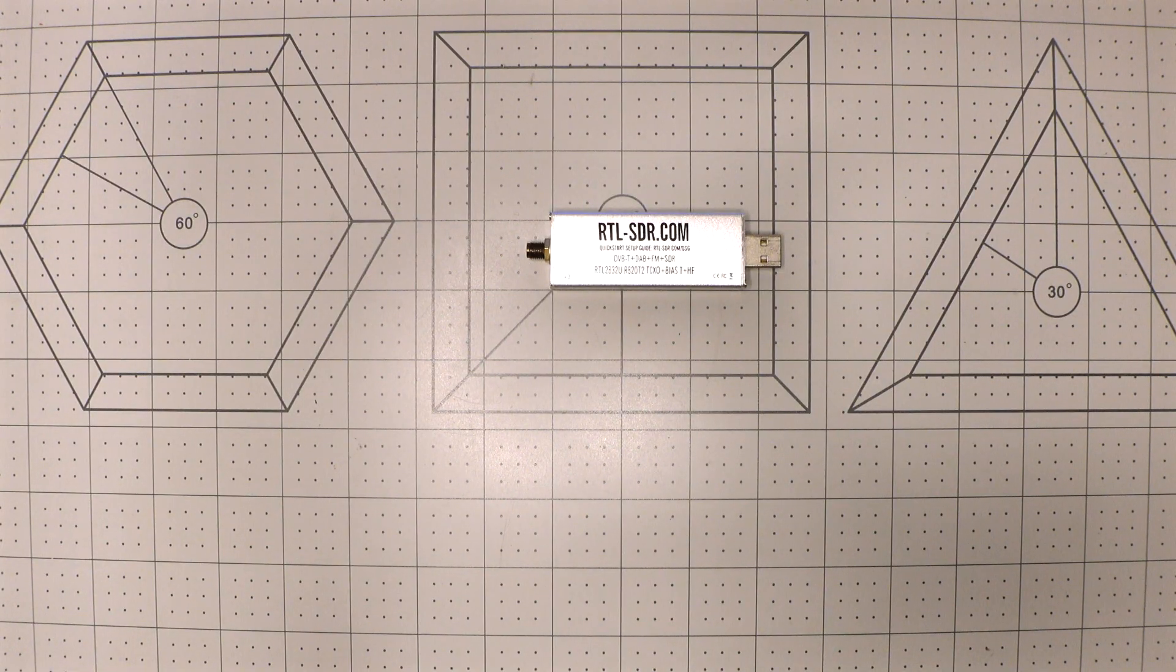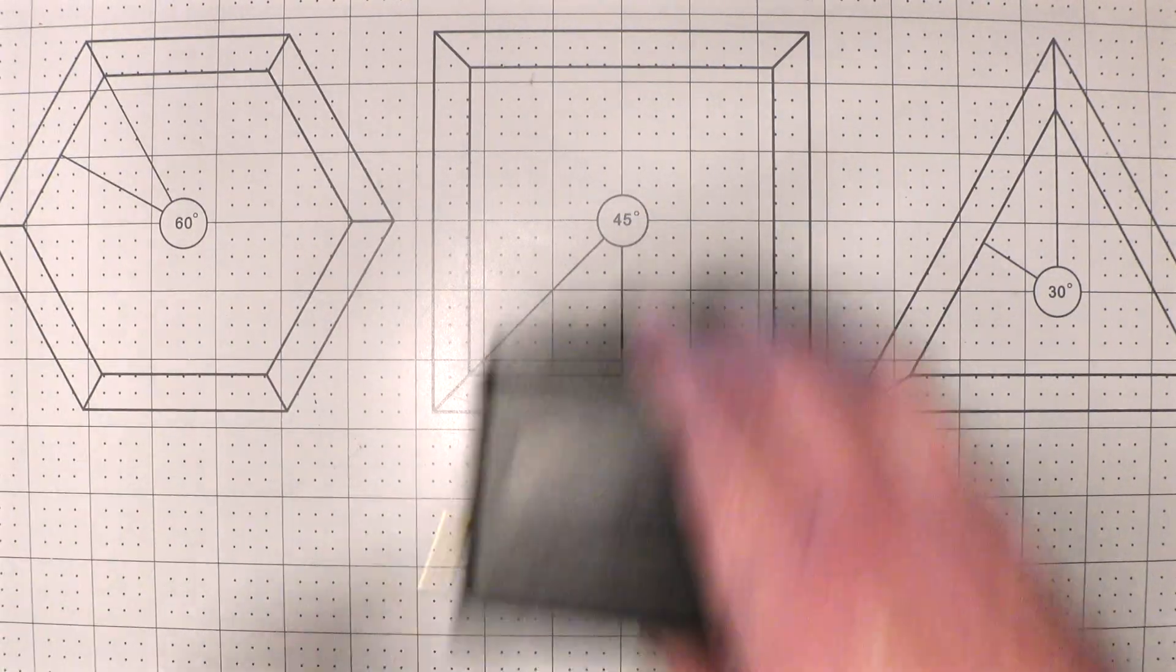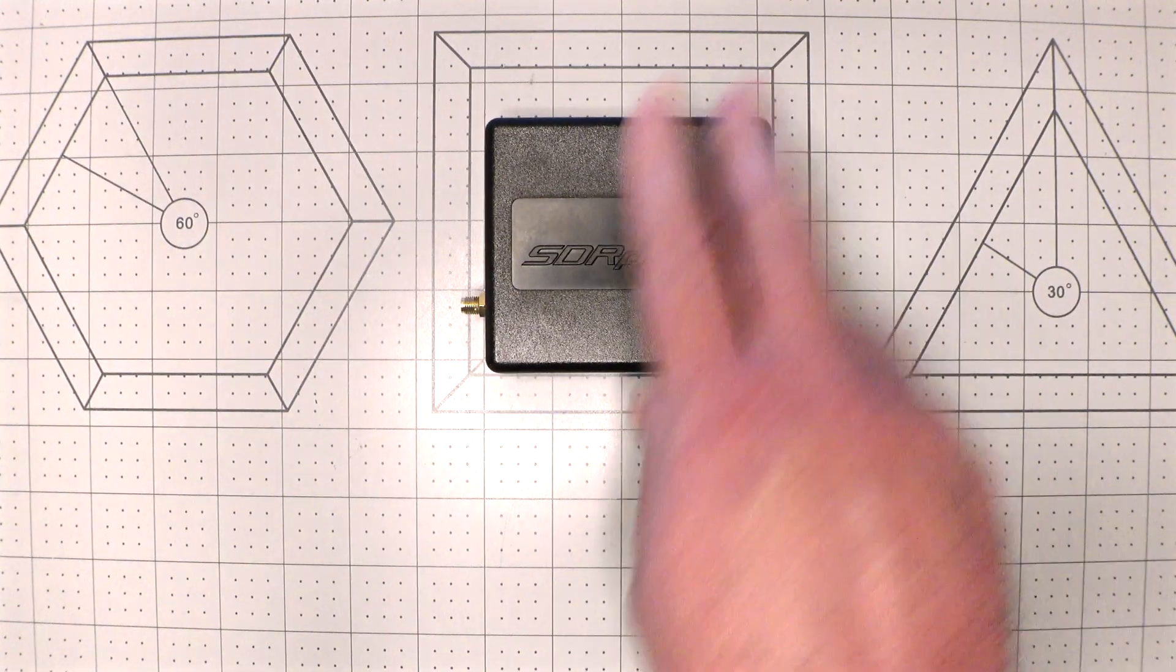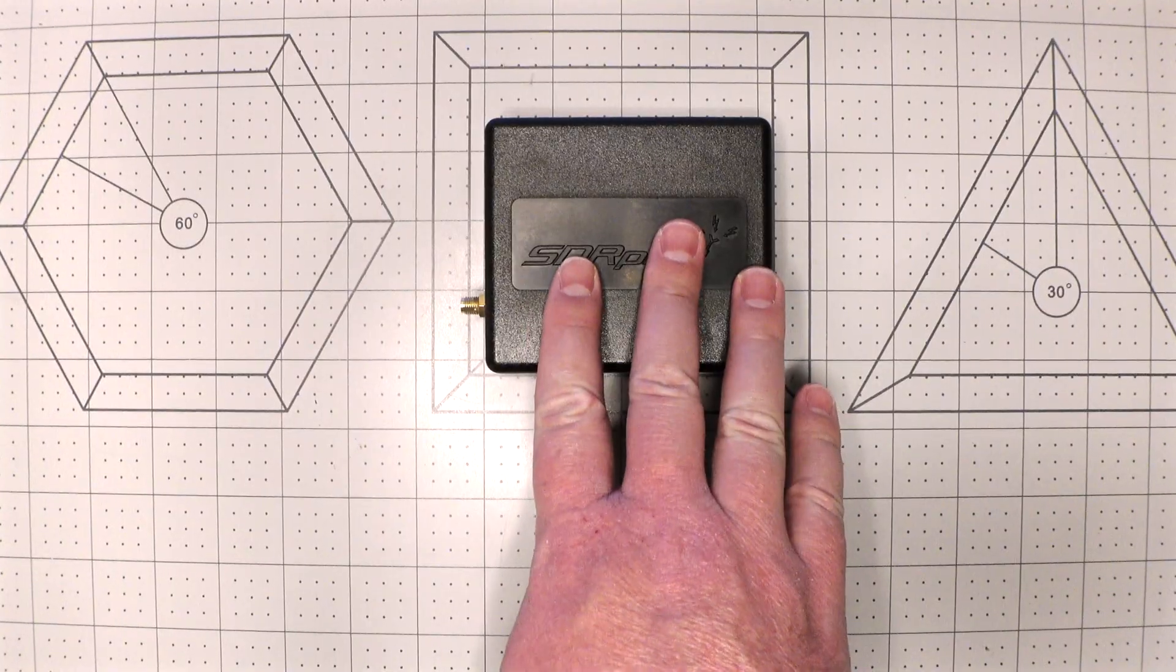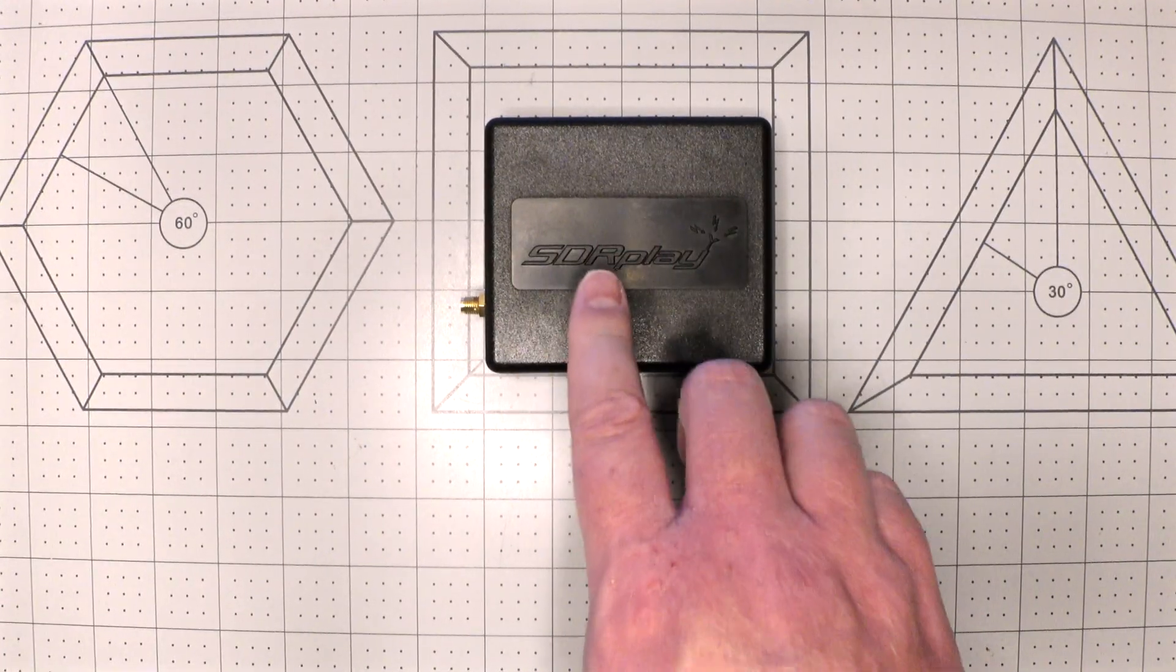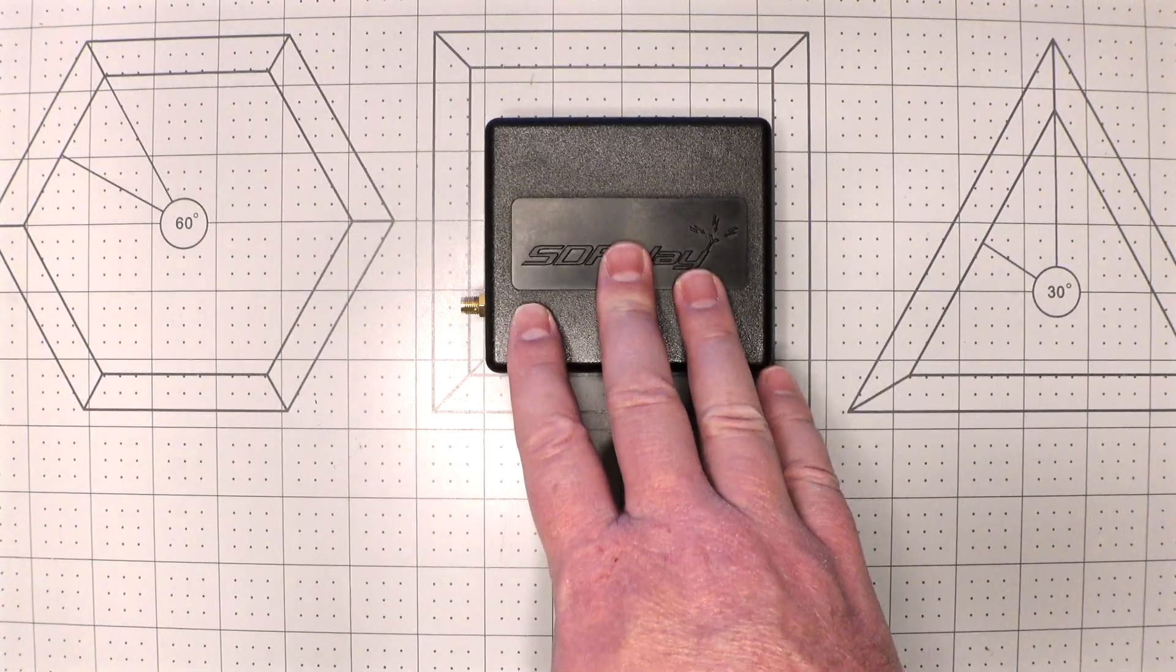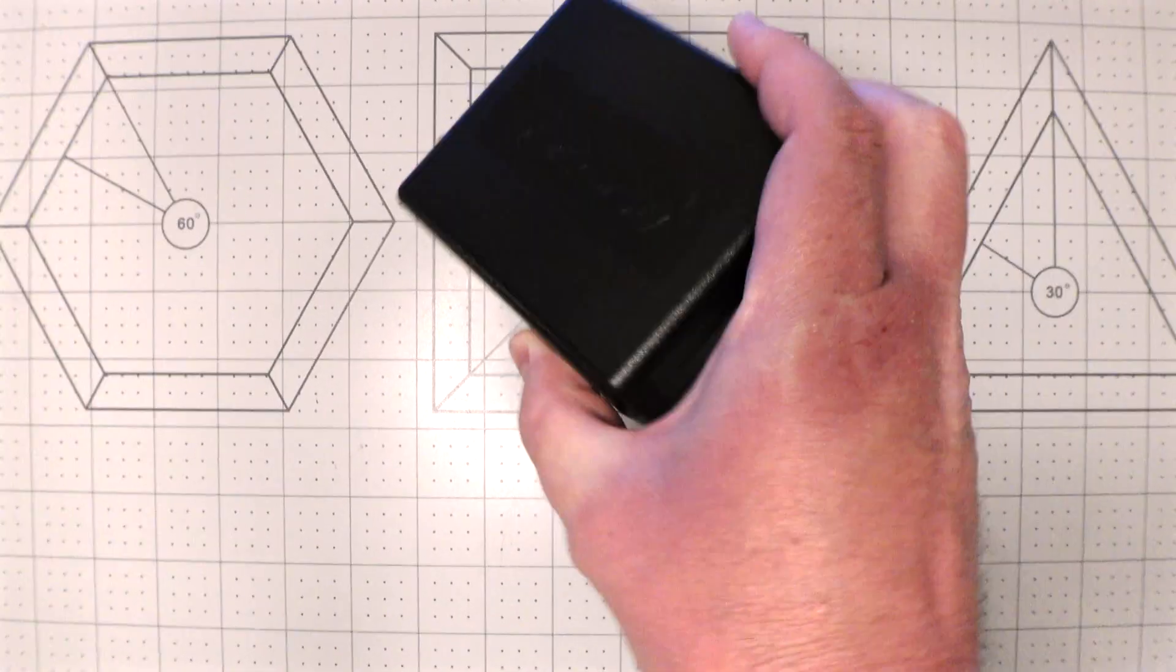So the next thing I got was this unit right here. This is an RSP1A from SDR Play. This was closer to a hundred dollars or maybe even a little bit more. However, this SDR, which is a software defined receiver, was much more equipped to pick up all different kinds of radio signal, including shortwave, and it does a very good job at it.